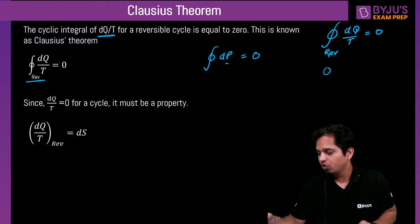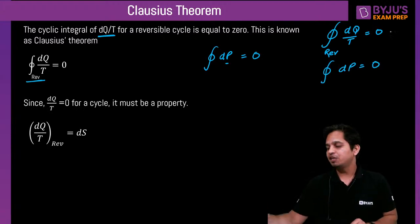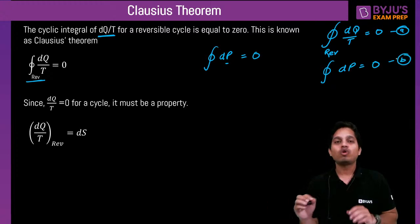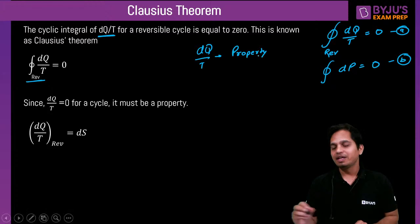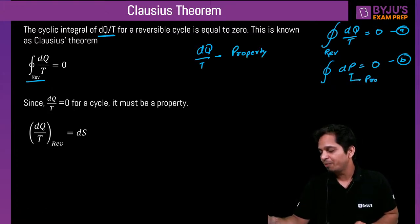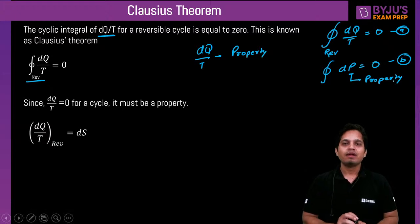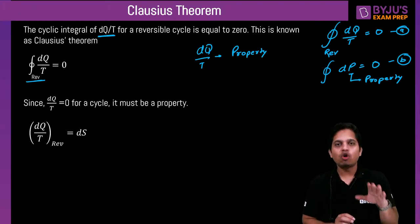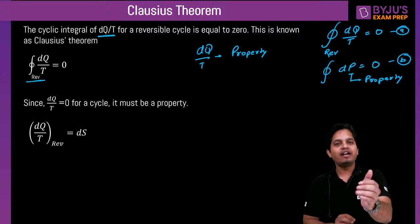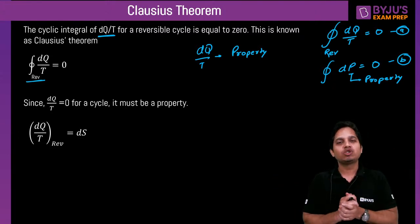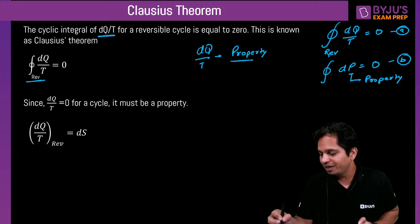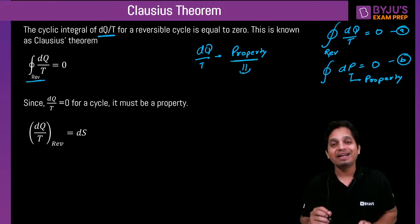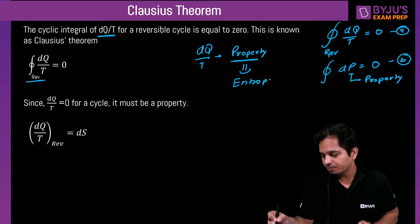Clausius says the cyclic integral of dQ/T is also zero. If I compare these two statements, I can conclude that dQ/T is a property. Because the cyclic integral of a property is zero, and Clausius's statement tells me that the cyclic integral of dQ/T is also zero. This property is named entropy, denoted by S.